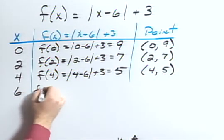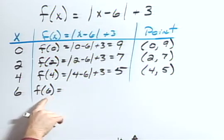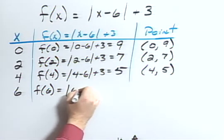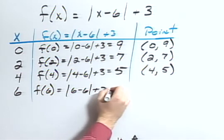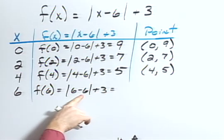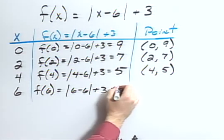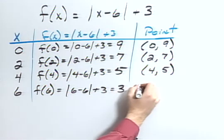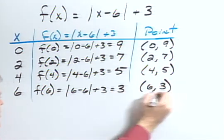And 6, f of 6, the absolute value of 6 minus 6 plus 3. 6 minus 6 is 0. 0 plus 3 is 3, so that'd be 3. So I'd have the coordinate 6, 3.